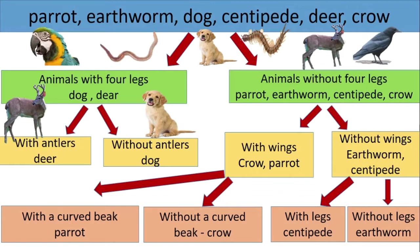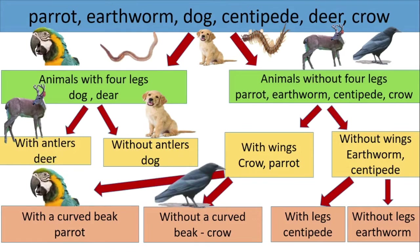Out of crow and parrot, parrot has a curved beak, but a crow doesn't have a curved beak. So a parrot can be put under the animals with a curved beak, and the crow can be put under the animals without a curved beak. The last category: out of earthworm and centipede, centipede goes under the animals with legs, and the earthworm goes under the animals without legs. That is all about dichotomous keys.